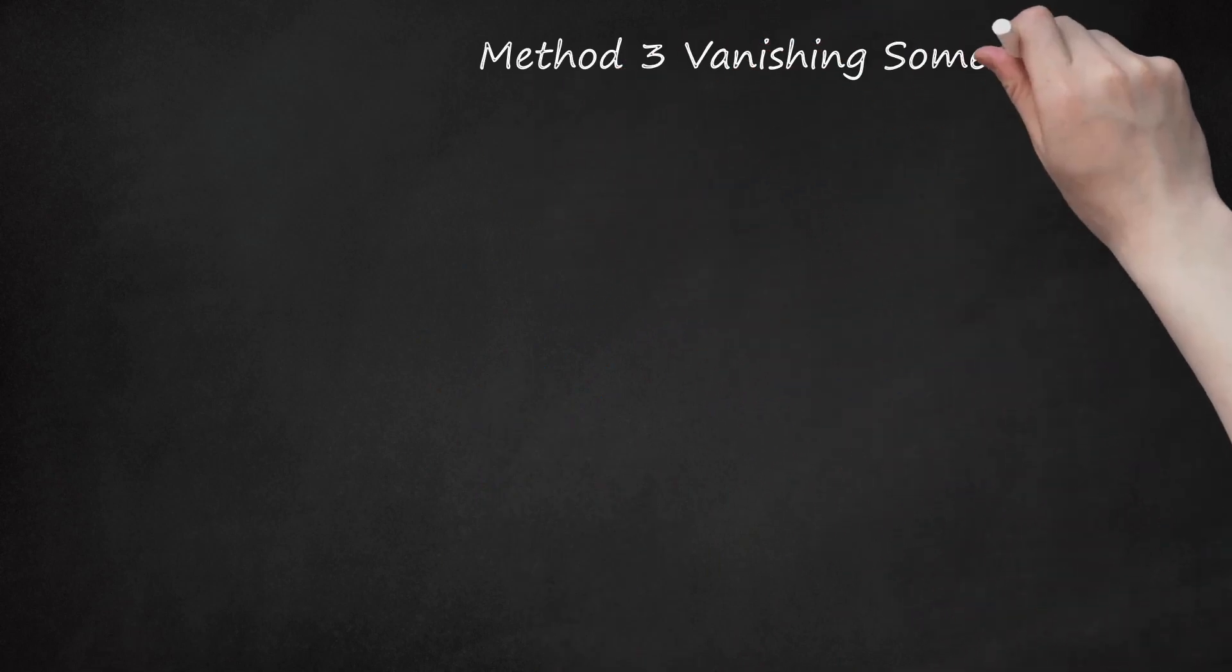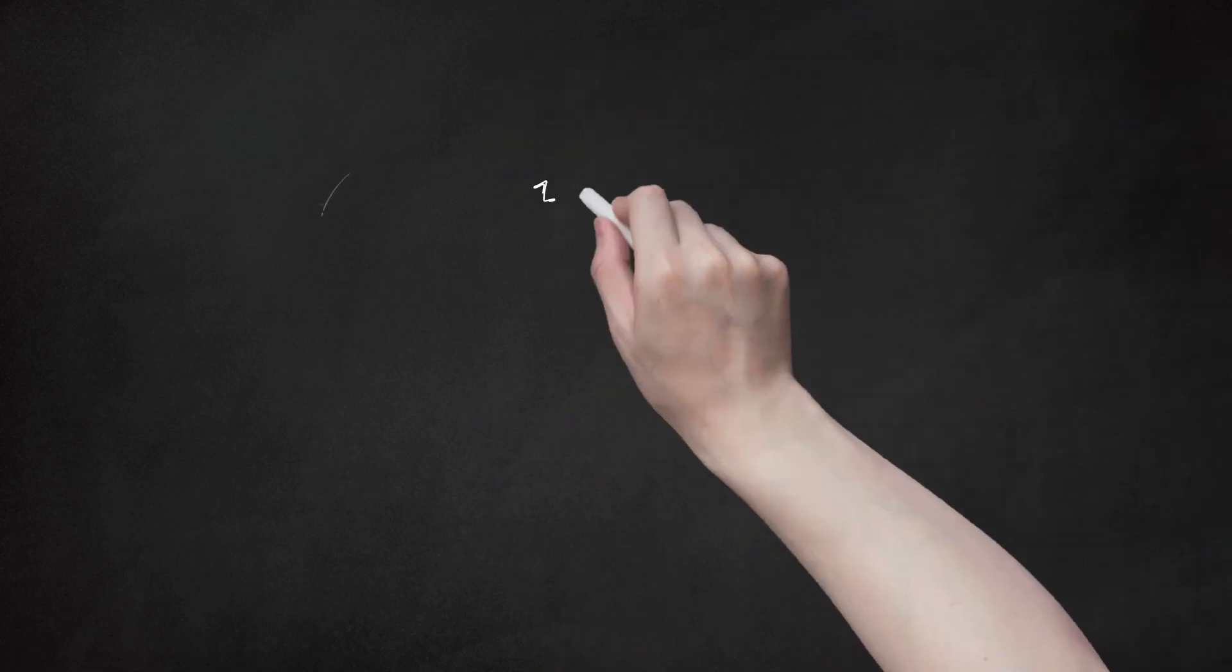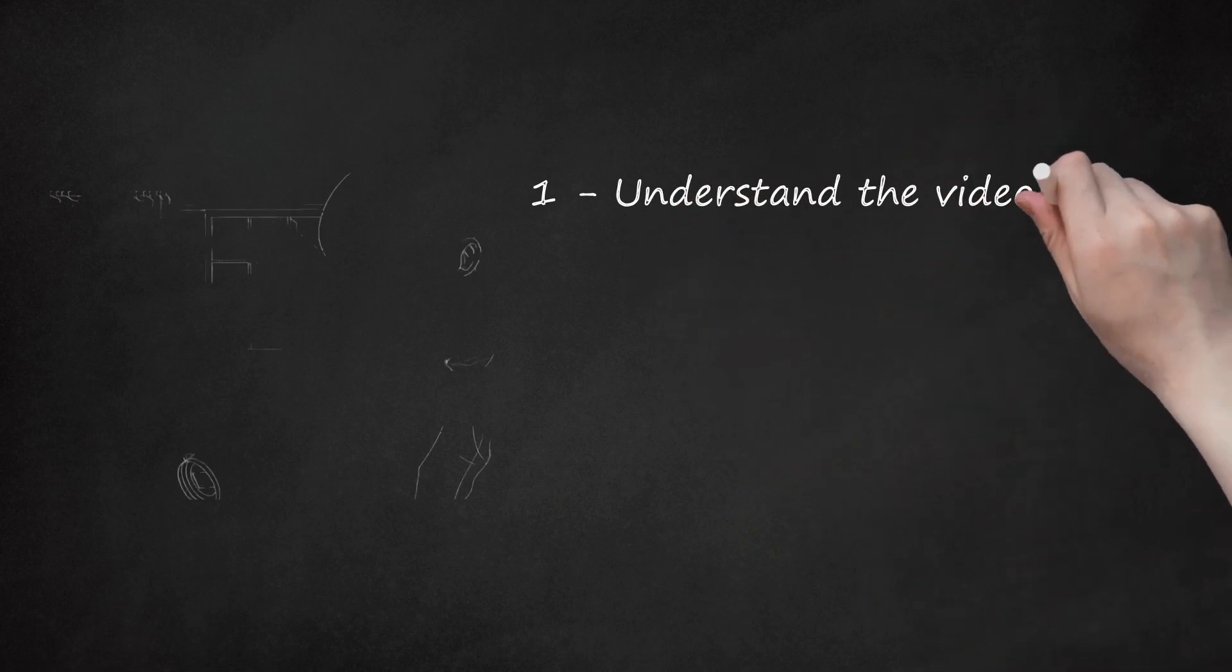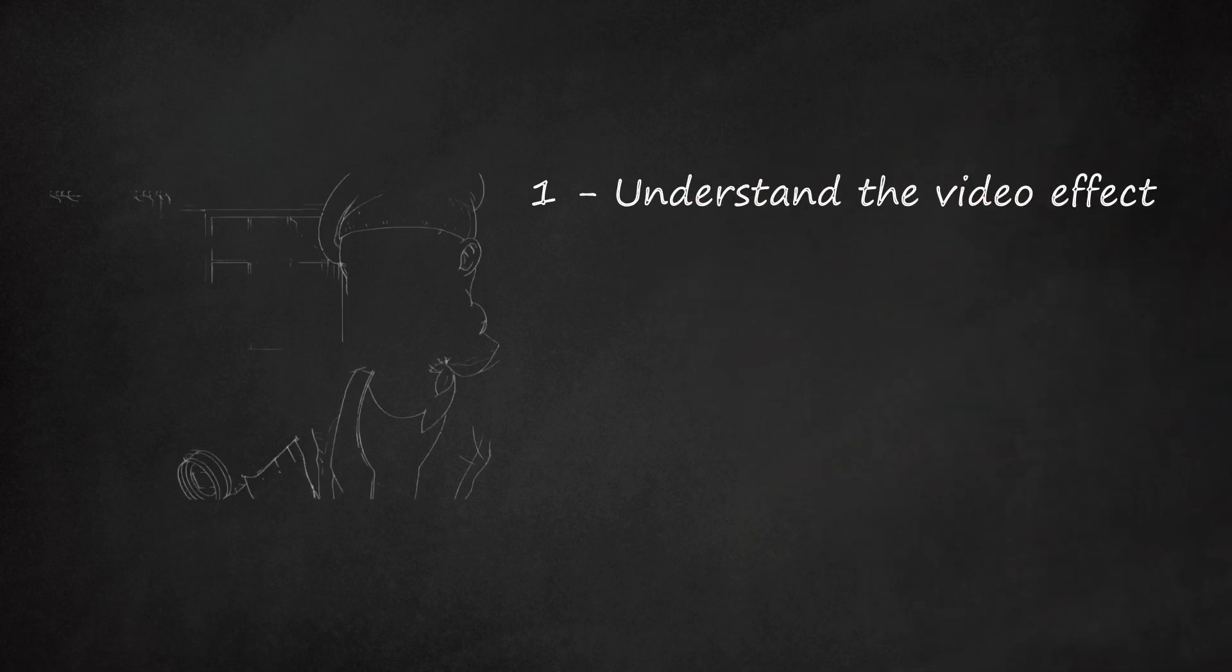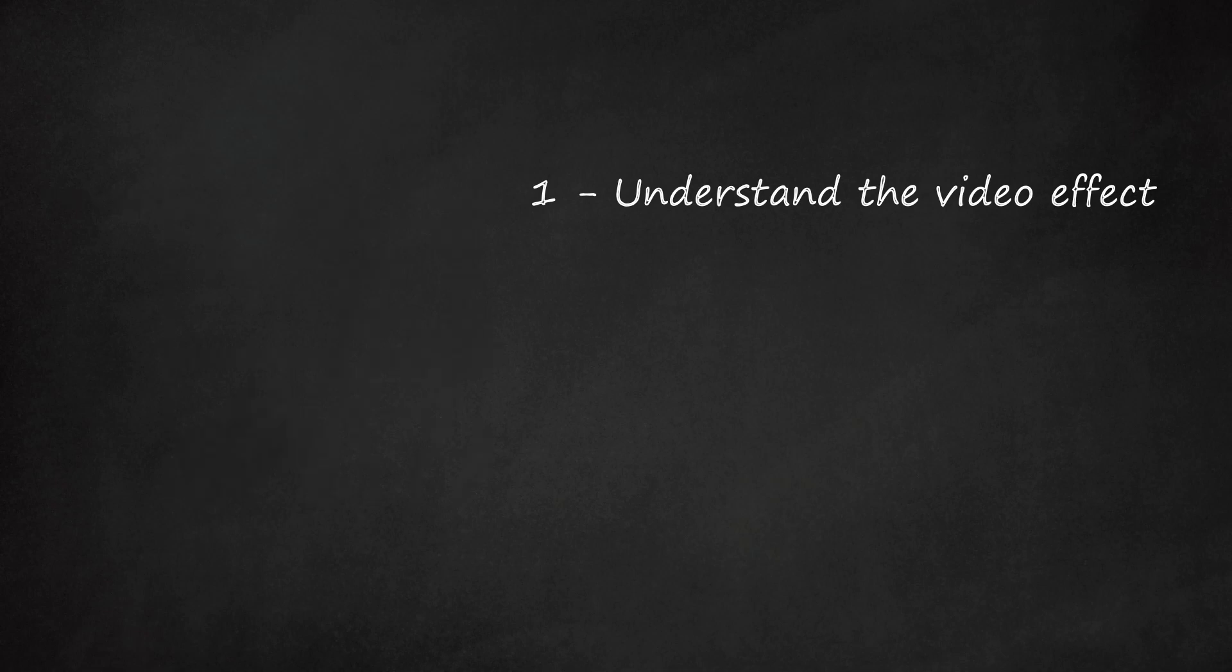Method 3: Vanishing Someone on Camera. Step 1 - Understand the Video Effect. This trick is an easy way to vanish someone from a video. It doesn't require a live audience but can look professional. You can incorporate this trick into any type of video project you're working on.